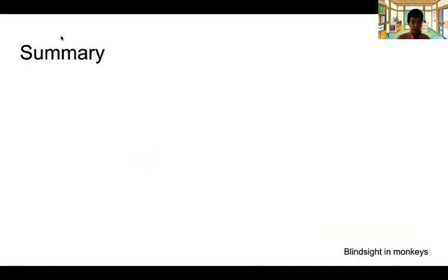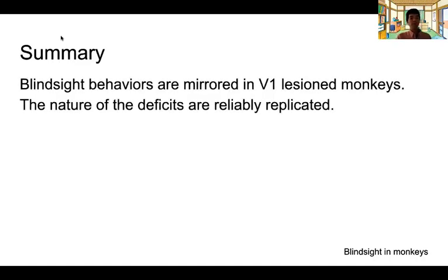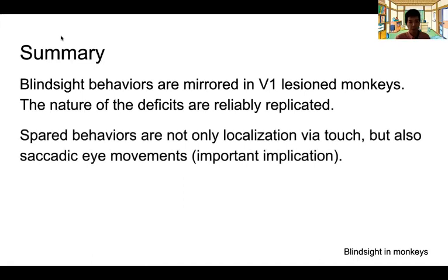In summary, this part of the lecture showed evidence that blindsight behaviors are mirrored and evidenced in V1-lesioned monkeys, and have been replicated recently. The nature of the deficits are reliably replicated. The spared behaviors include not only localization by touch, as demonstrated in human blindsight patients, but also saccadic eye movements — which we will discuss next week.